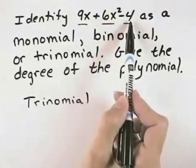Here there's no variable, which means the power is 0. So that means 2 is the highest power, which means this is a second degree polynomial.